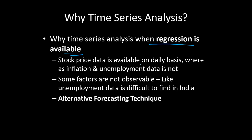One key reason is data frequency mismatch. Stock price data is available on a daily basis, whereas inflation and unemployment data are only available on a quarterly or monthly basis. Stock price varies every moment or every day, so you cannot build a model where the response variable changes daily but the independent variables only change every quarter. That mismatch makes regression impractical in such cases.